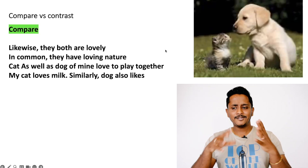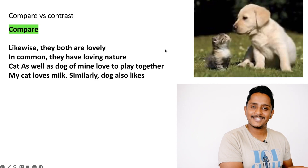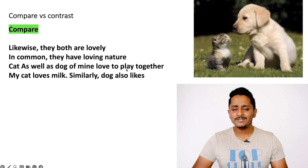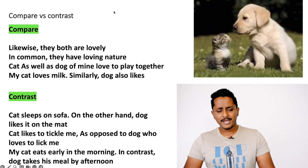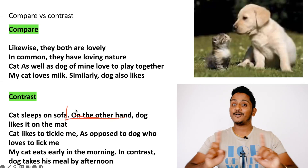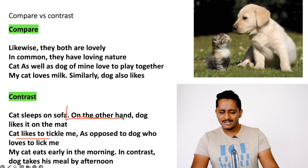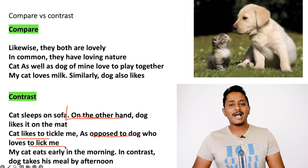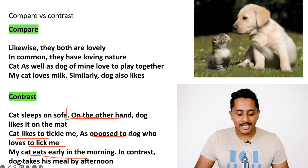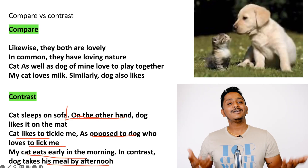When you compare or contrast, you study both subjects and categorize results: similarities go into comparing, differences go into contrasting. Now for contrast — 'My cat sleeps on the sofa; on the other hand, my dog likes to sleep on the mat.' 'My cat likes to tickle me, but my dog, as opposed to that, loves to lick me.' 'My cat eats early in the morning; in contrast, the dog takes its meal by afternoon.'